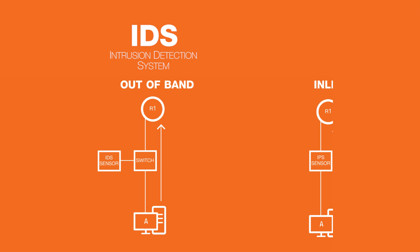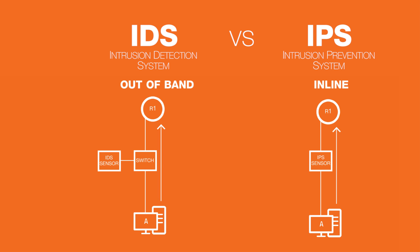An IDS, intrusion detection system, is out of band and simply gets copies of network traffic. It can be as simple as a system getting copies of traffic to inspect through a switch configured to send all traffic to the IDS. The IPS, intrusion prevention system, is inline, so original traffic must pass through the IPS. Since the IDS is out of band, it doesn't add any latency. An IPS adds latency since traffic is processed live.